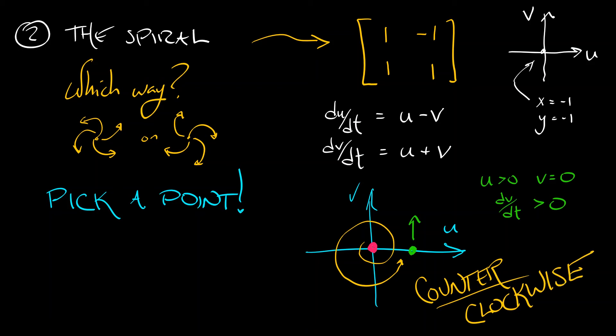Does this work in general? Yeah, it does. And it's much easier than trying to, I don't know, transform to polar coordinates or something like that. Nope. Just pick a point. That's a great way to determine the direction of a spiral.